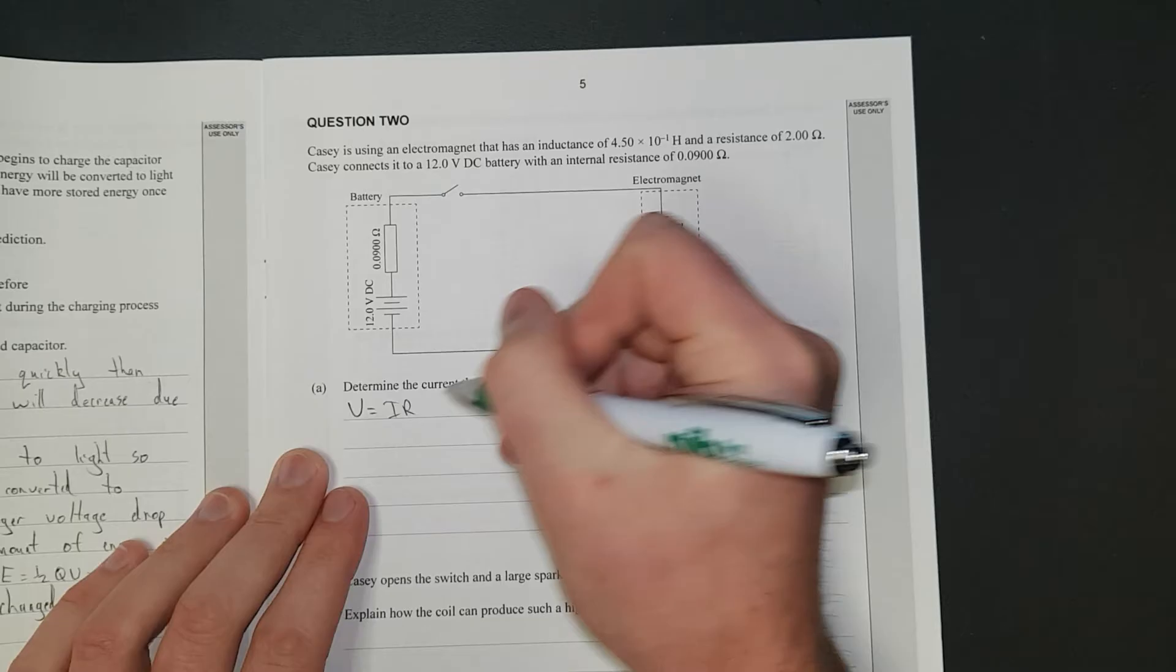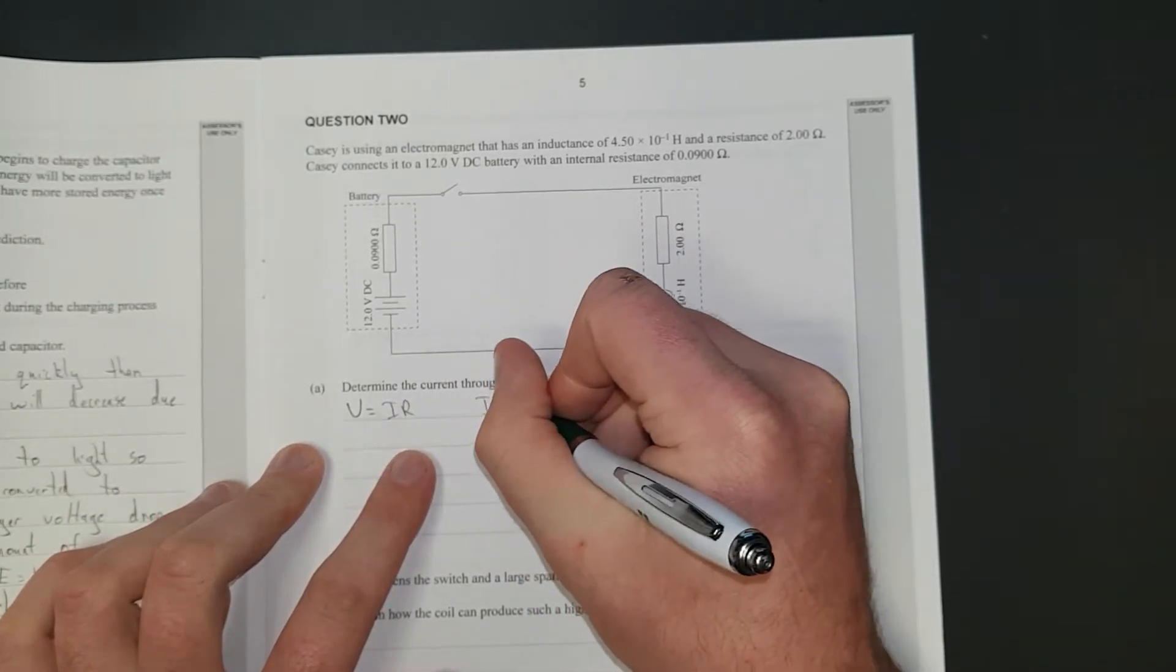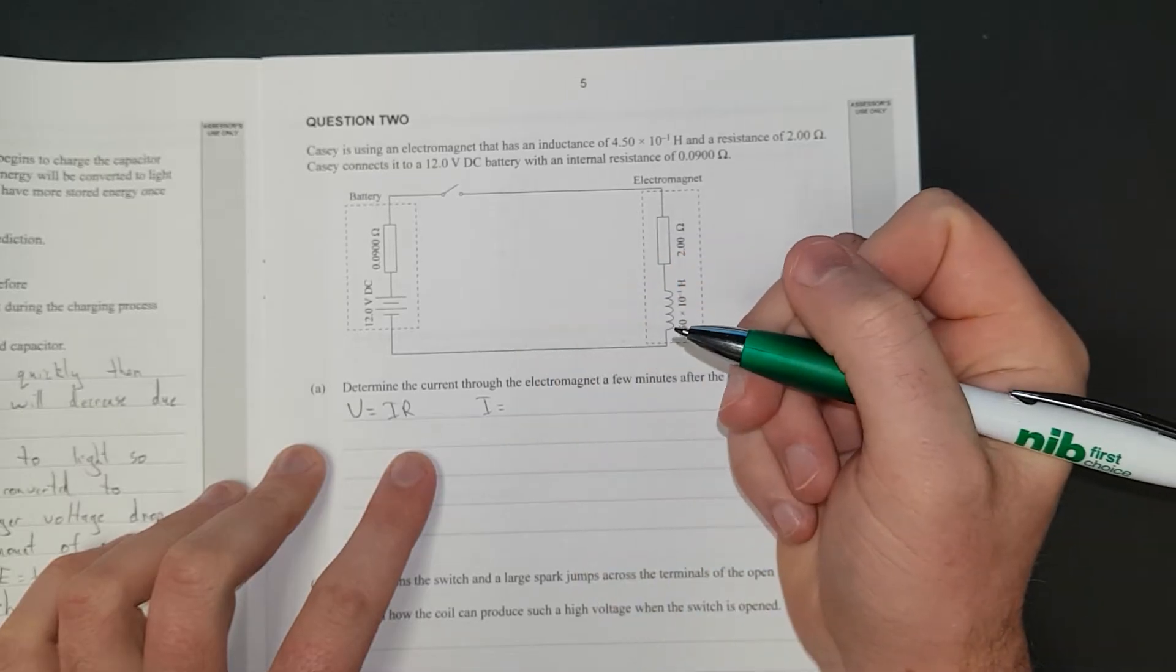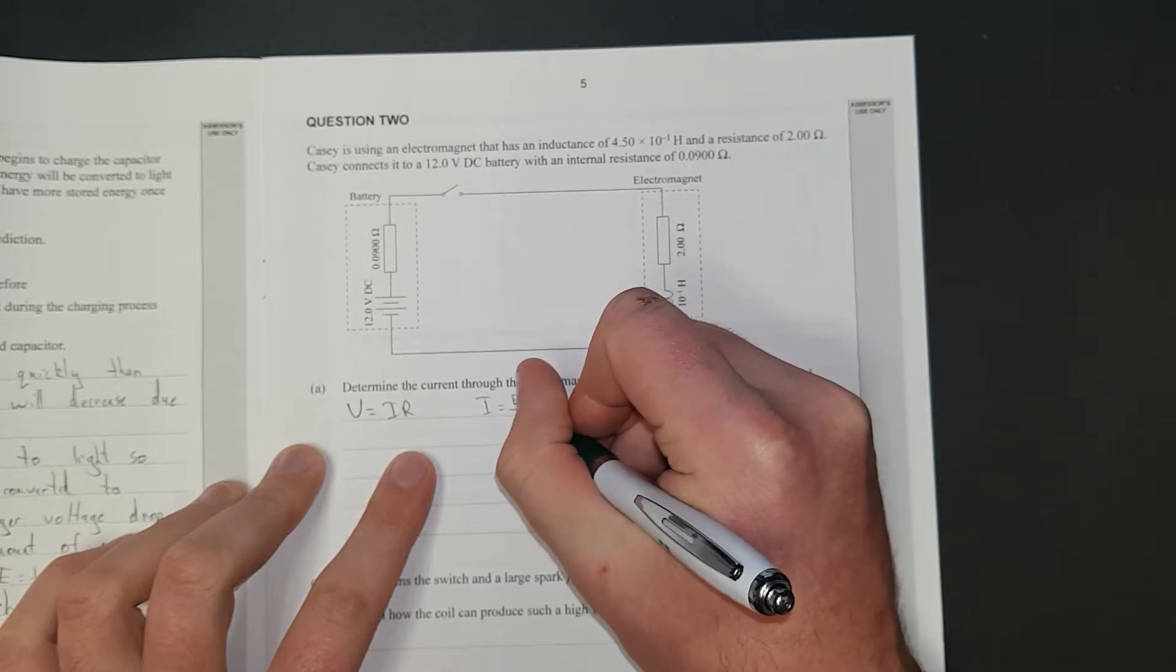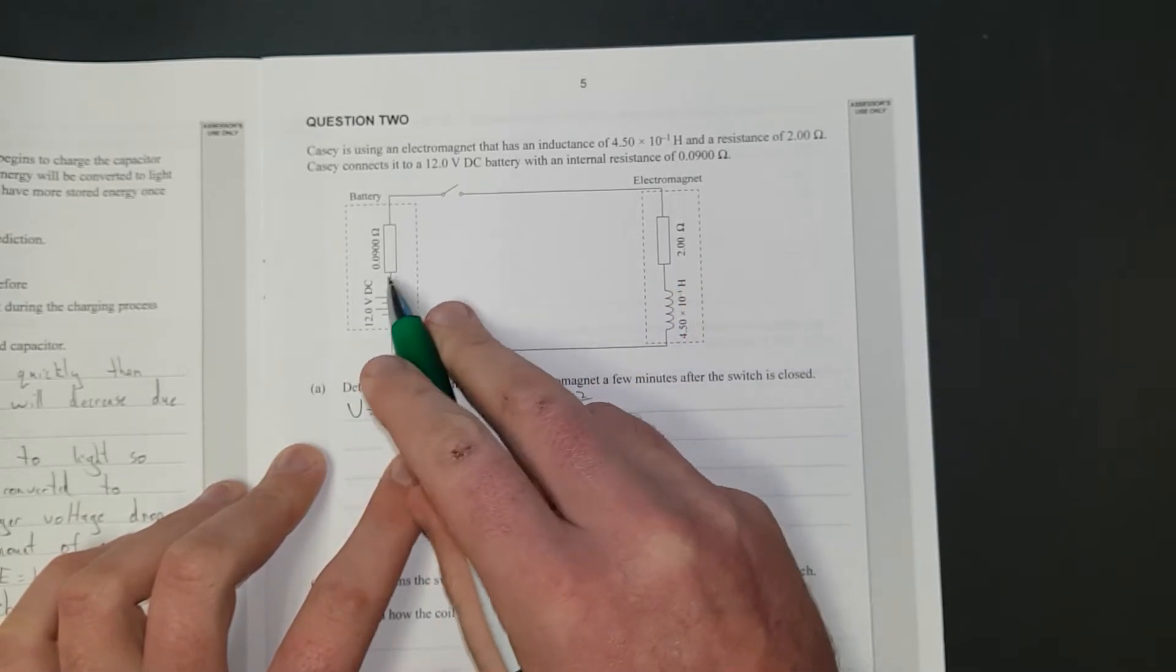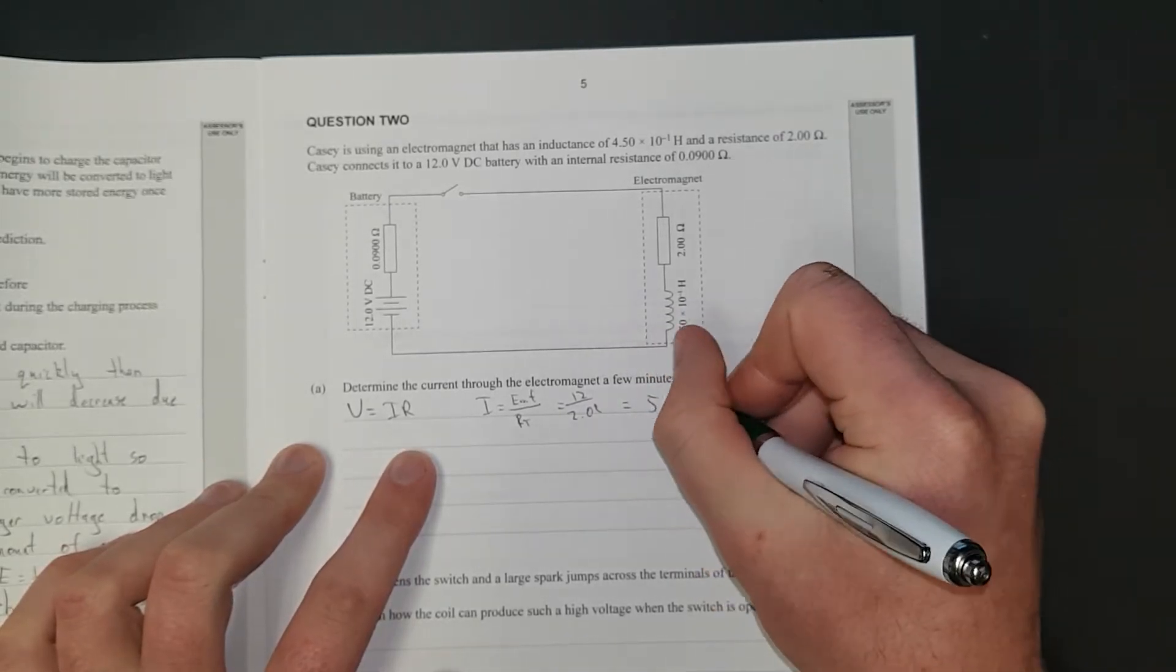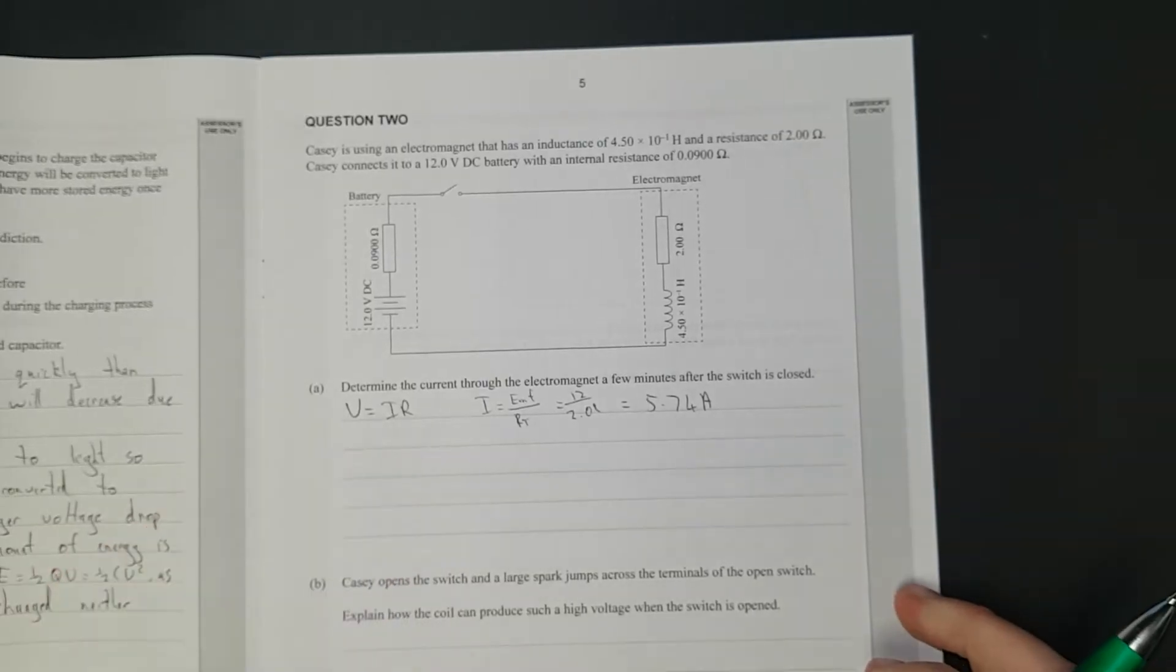I'll just look at the quick and dirty way because it's not a show question. You can just calculate V equals IR. You should really be using the EMF and all that other stuff. Current is equal to EMF over total resistance, which is just going to give me 12 divided by 2 plus 0.9 because they're in series, which is going to give me 5.74 amps.